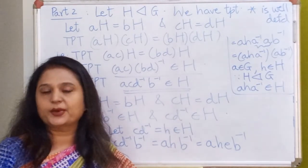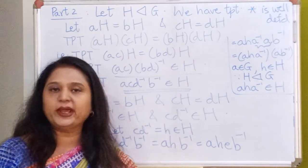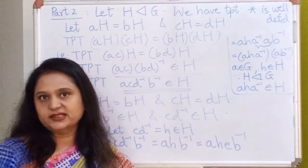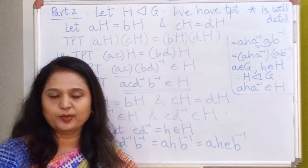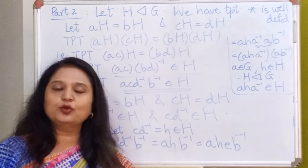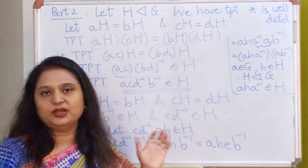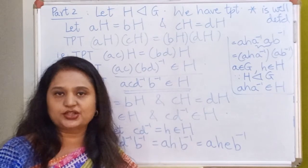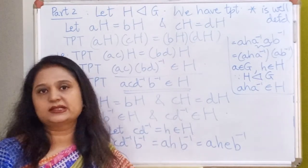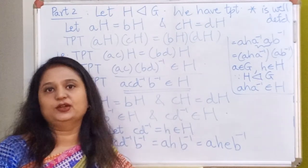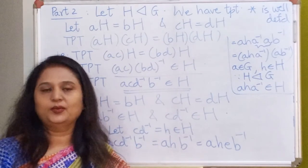So we have spent this entire lecture proving that this operation of left coset multiplication makes sense if and only if H is normal. In the next lecture we will prove that the set G/H with respect to this operation becomes a group, and that group will be called the factor group of G by H. That is all for now, thank you.